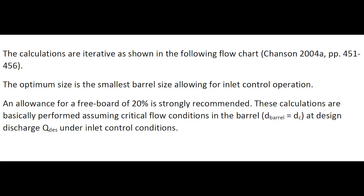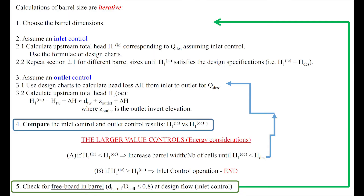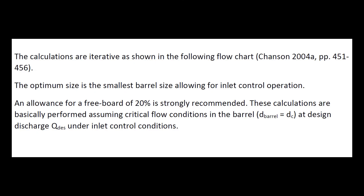The calculations are iterative, as shown in the following flow chart. The optimal size is the smallest barrel size allowing for inlet control operation. As part of the design, an allowance for freeboard of about 20% should be considered. These calculations are basically performed assuming critical flow condition in the barrel.